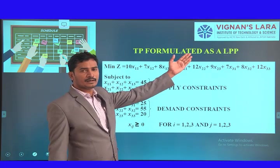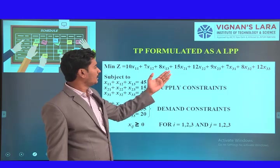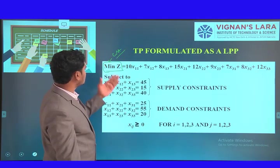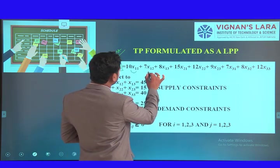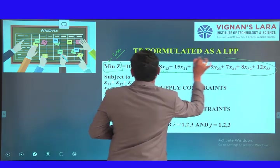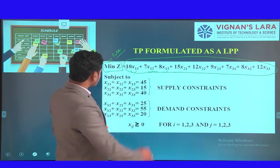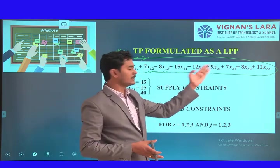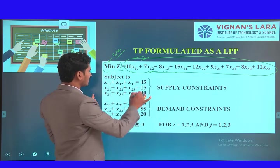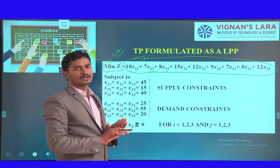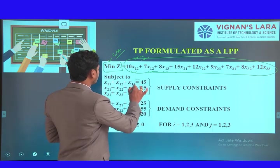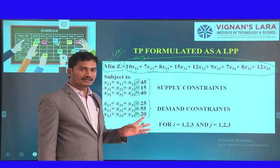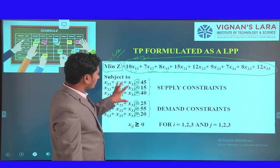Converting the transportation problem into a linear programming model: the objective is minimization because we are going to optimize and minimize the cost. We have taken terms like 10X1, 7X2, 8X3 — these are all cost units, based on destinations, sources, and traveling paths. For the constraints, we take supply constraints and demand constraints. Here there is no need to use less-than-or-equal-to or greater-than-or-equal-to type constraints — we simply use equality constraints. There is no need to add surplus, slack, or artificial variables in the standard sense.